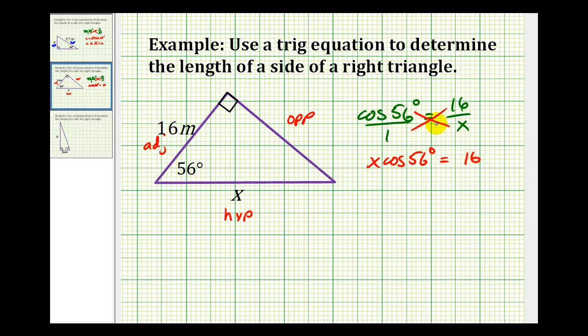To solve for x, we divide both sides by cosine 56 degrees. So x equals this quotient.